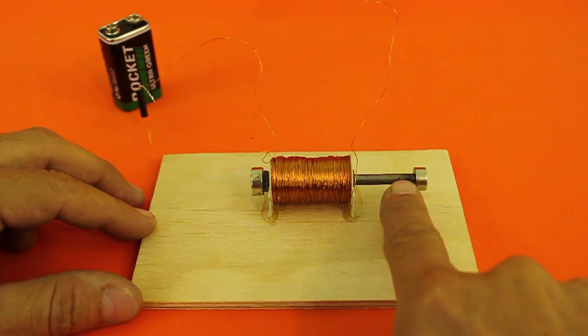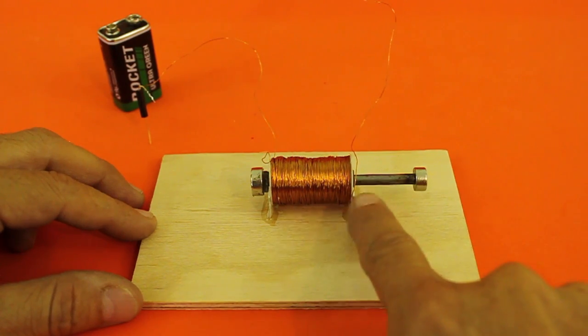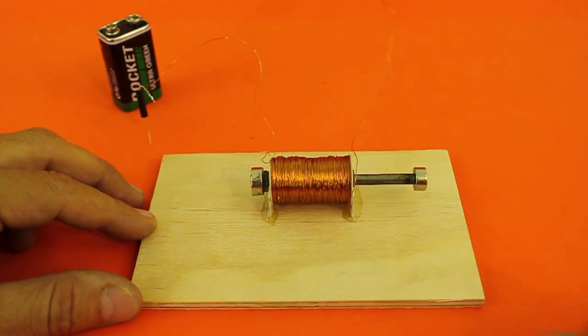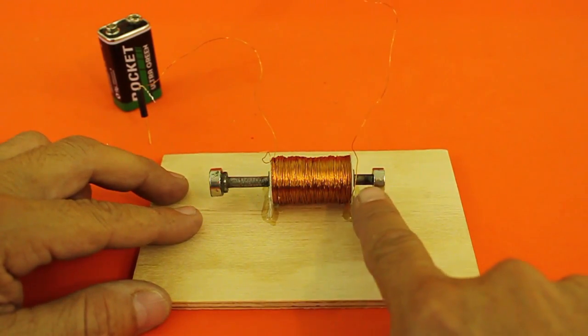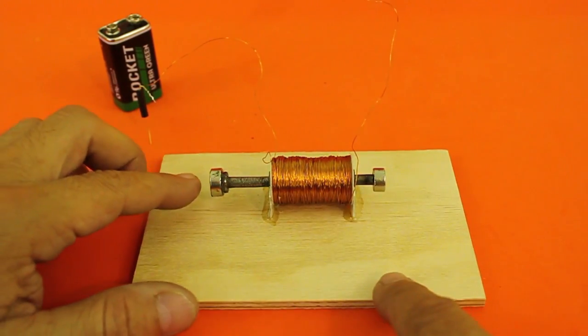On the other hand, this other magnet has the same polarity that this side of the solenoid has. So when we apply a current, this magnet is repelled to the right.